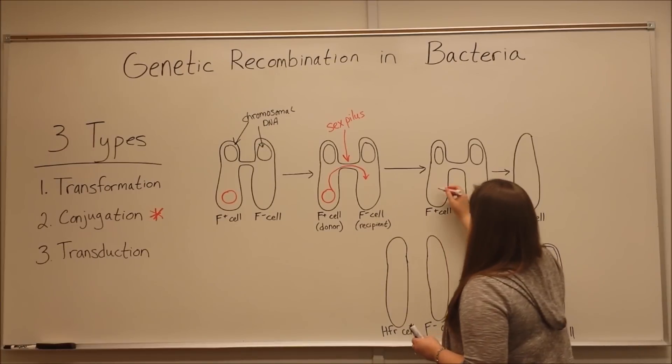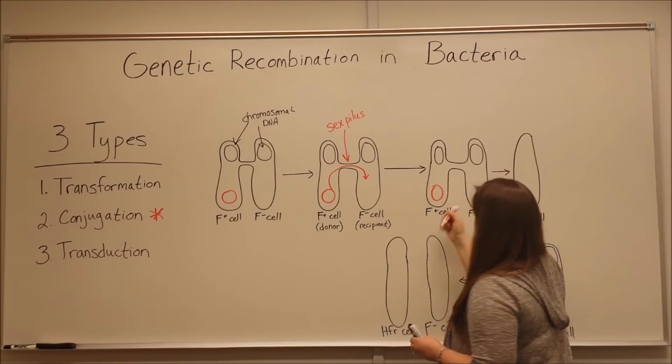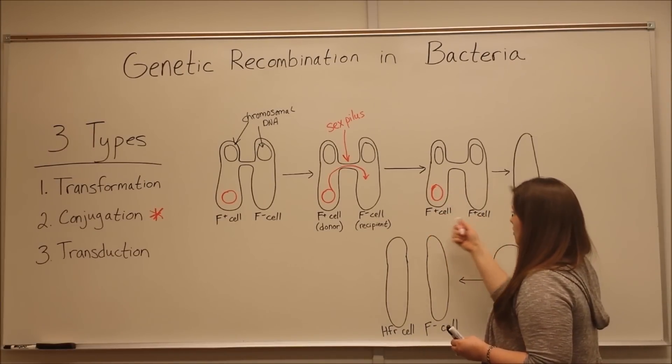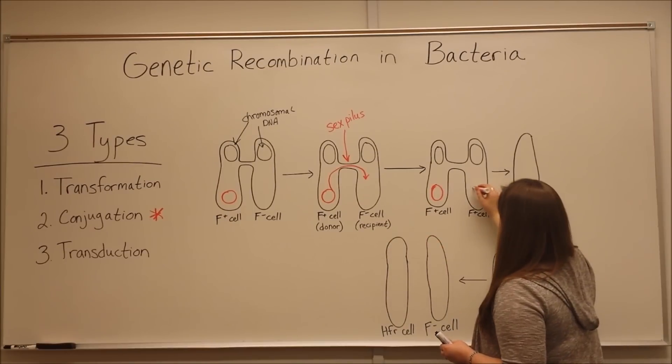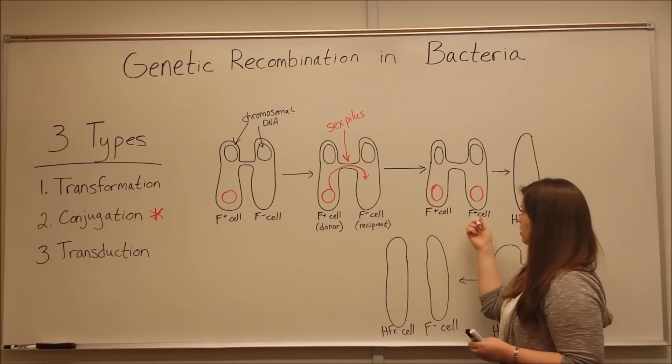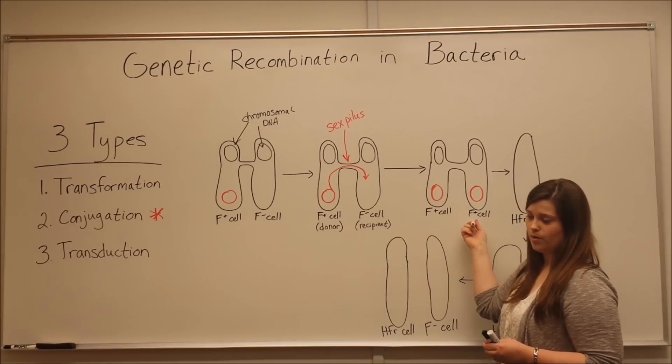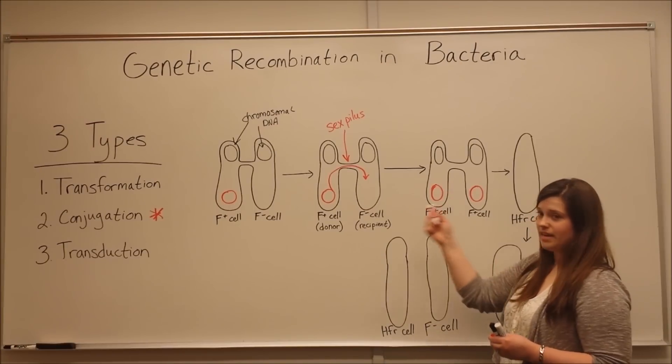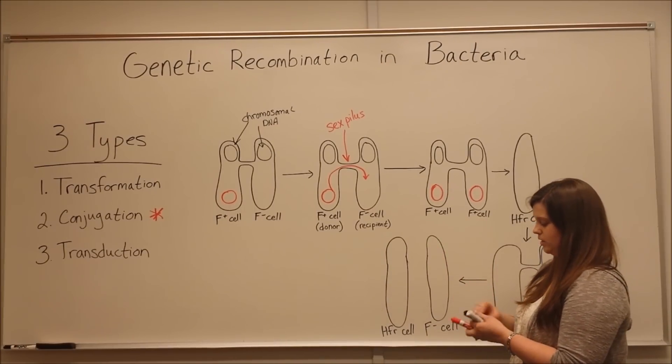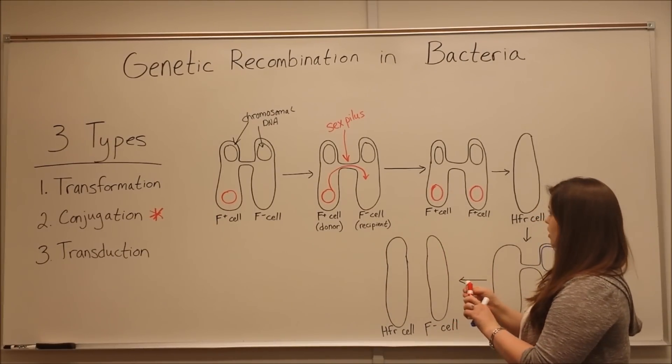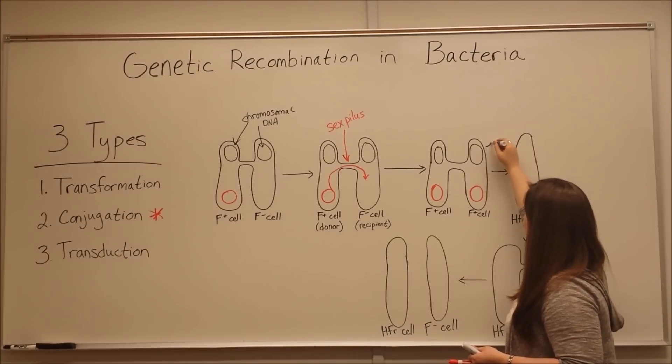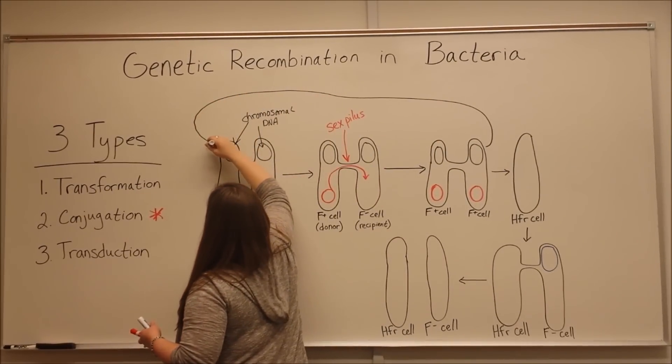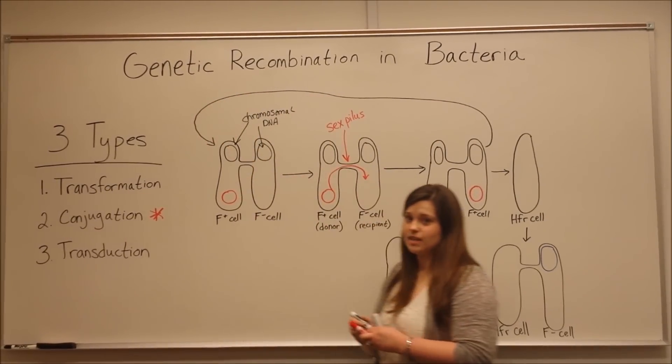The result is we have our original F-plus cell still with its fertility plasmid, but now the recipient cell also has a copy of the fertility plasmid, so it's also an F-plus cell. It's capable of repeating this process, where the newly made F-positive cell starts this process over again.